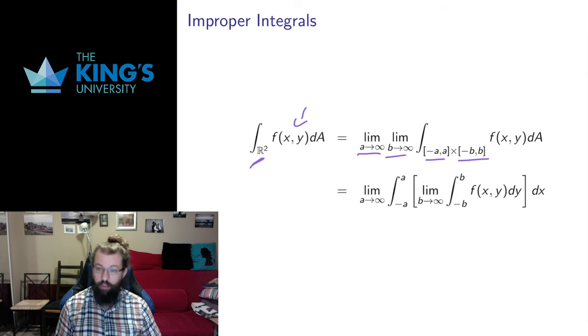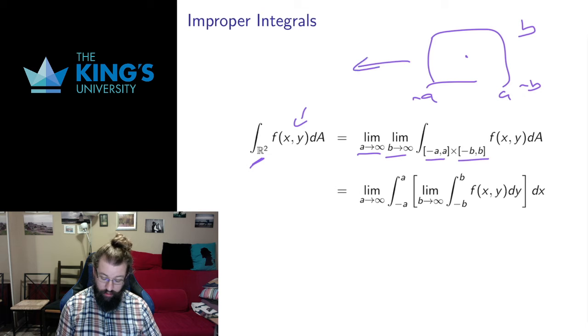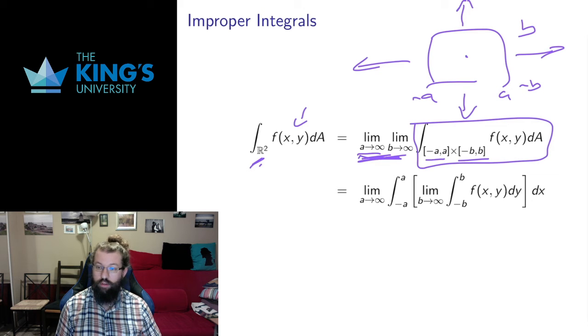And I take the limit as both of these things go out. So I have the origin here, I have from -a to a here, I have from -b to b here, and the limit in the x-coordinate is pushing the a out, the limit in the y-coordinate is pushing the b out. And in these two limits, I will end up getting the entire plane, but this is still an integral over an integral, which is the thing that I have to find.